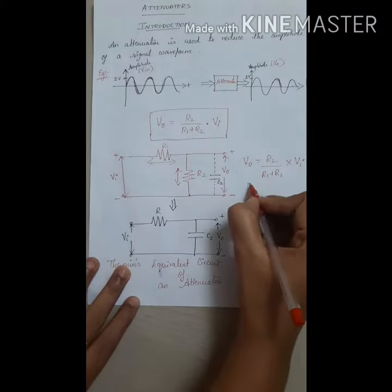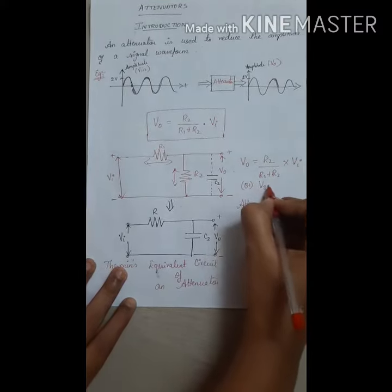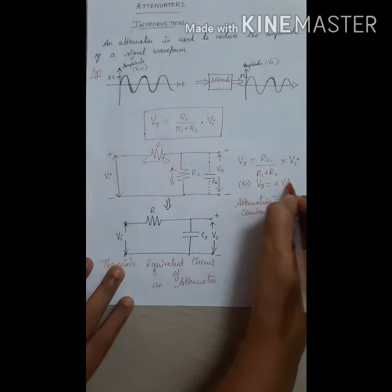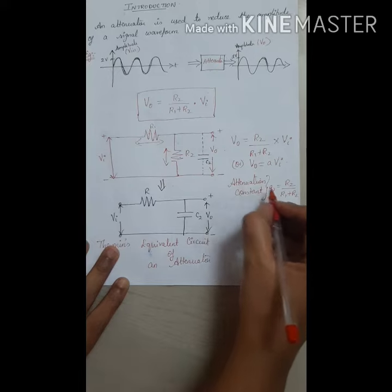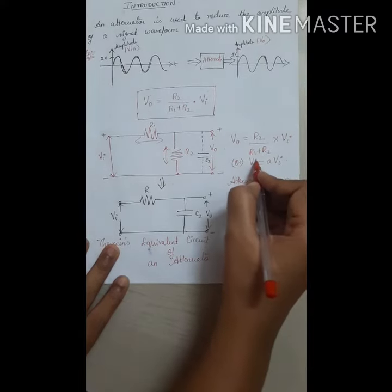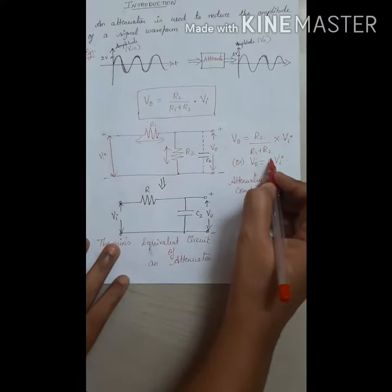The output can also be written as V0 equals A times Vi. This A is the attenuation constant, and A equals R2 by R1 plus R2.